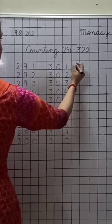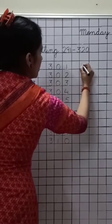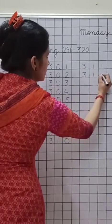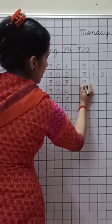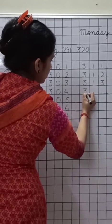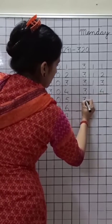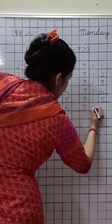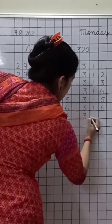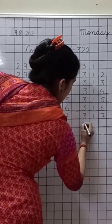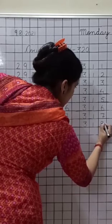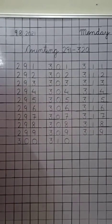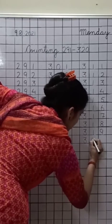Now again, leave this line. Write down here: 311, 312, 313, 314, 315, 316, 317, 318, 319. What comes after 19? 20. Good. So write down here: 320.